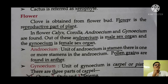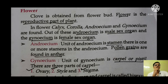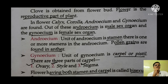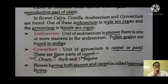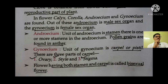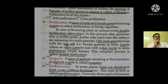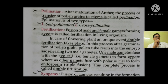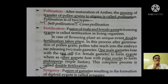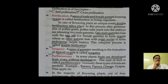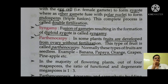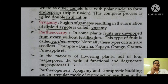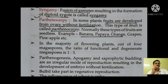Flower is the reproductive part of the plant. A flower has four whorls: calyx, corolla, androecium, and gynoecium. Androecium is the male sex organ and gynoecium is the female sex organ. The unit of androecium is a stamen and pollen grains are found in the anther. The unit of gynoecium is carpel or pistil and there are three parts of carpel: ovary, style, and stigma. Flowers having both stamen and carpel are bisexual flowers. Pollination is the process of transfer of pollen grains to a stigma. There are two types: self-pollination and cross-pollination. Fertilization is the fusion of male and female gametes forming a zygote. In flowering plants, one unique event takes place — double fertilization. The fusion of gametes resulting in the formation of a diploid zygote is called syngamy.